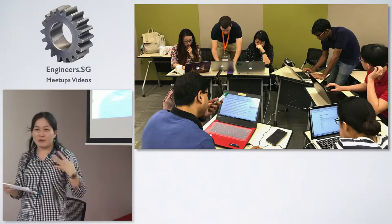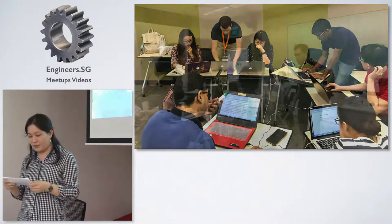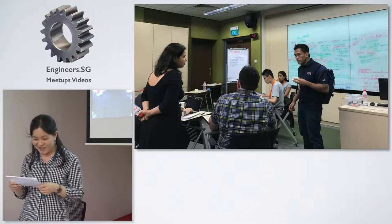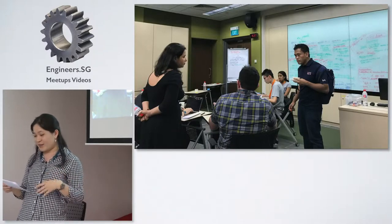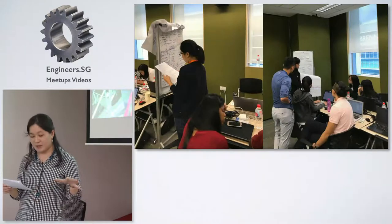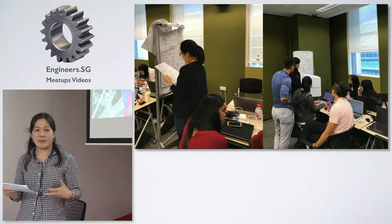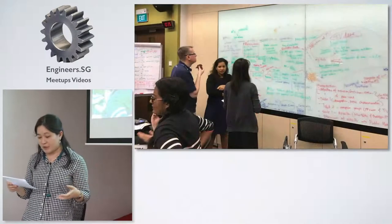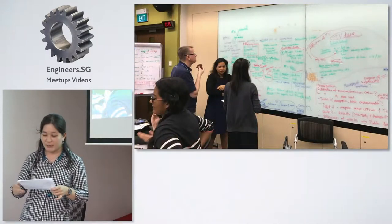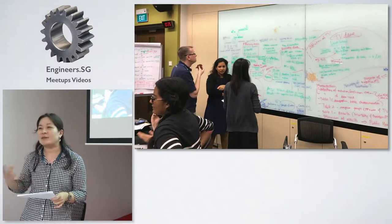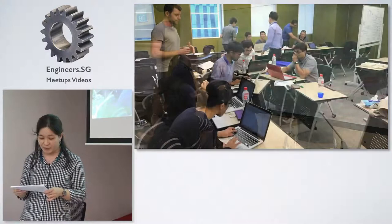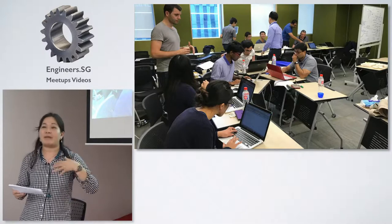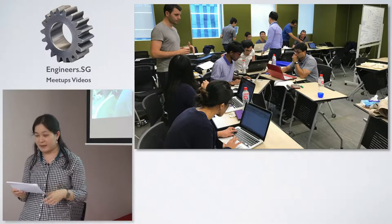Our first problem was that we were quite unsure of our goal. Our first hypothesis changed again and again over the 48 hours. We started off wanting to find the predictors of mortality among Sepsis patients. There are various methods to predict ICU mortality, one of which is the APACHE scores, which gives the likelihood of how a patient will die in ICU.